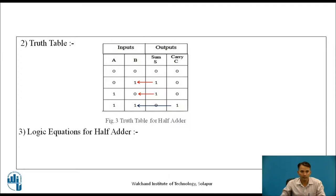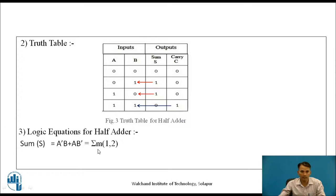In the next step, we are writing logical equations for the half adder. Logic equations are written for all the outputs — here we have two outputs, sum and carry. The equation for sum: since we get sum for two combinations, 01 and 10, the equation becomes A̅B + AB̅, which is written in terms of minterms as Σm(1,2). For carry, we get output for only one combination when A and B are both 1, so the equation for carry is C = AB, written as Σm(3).